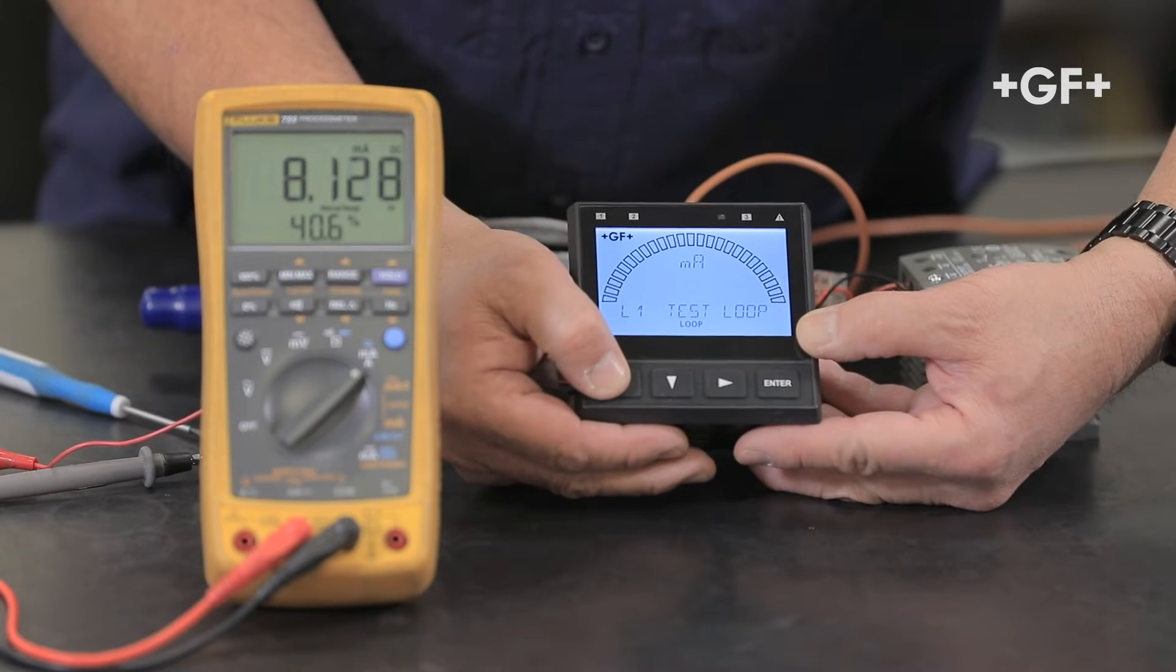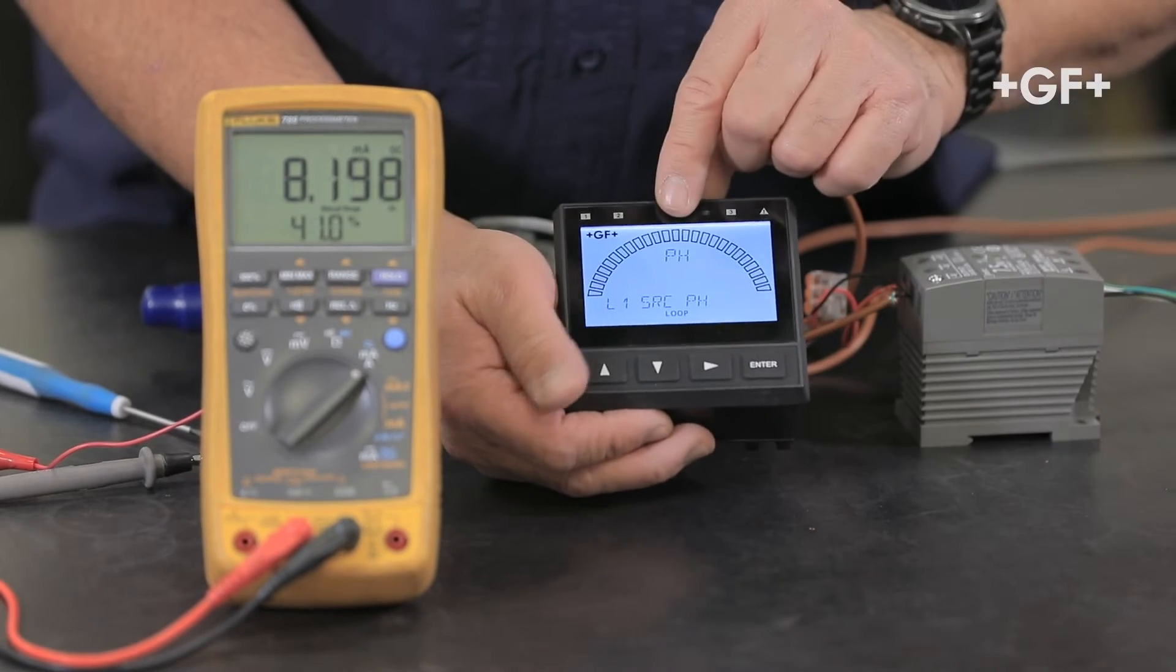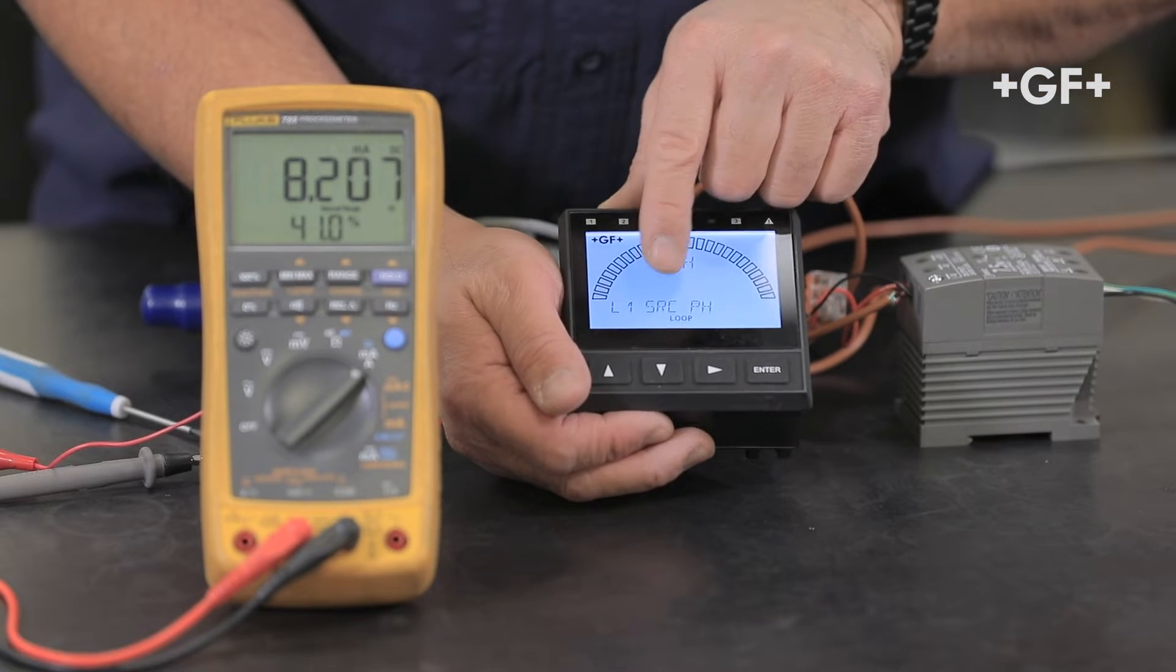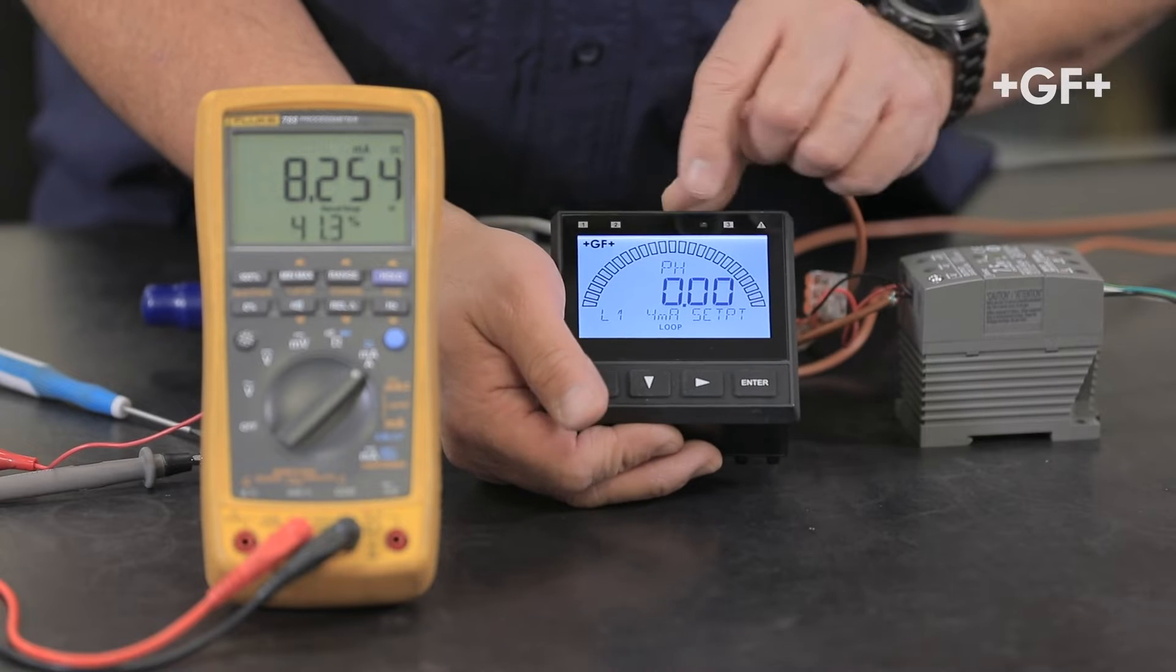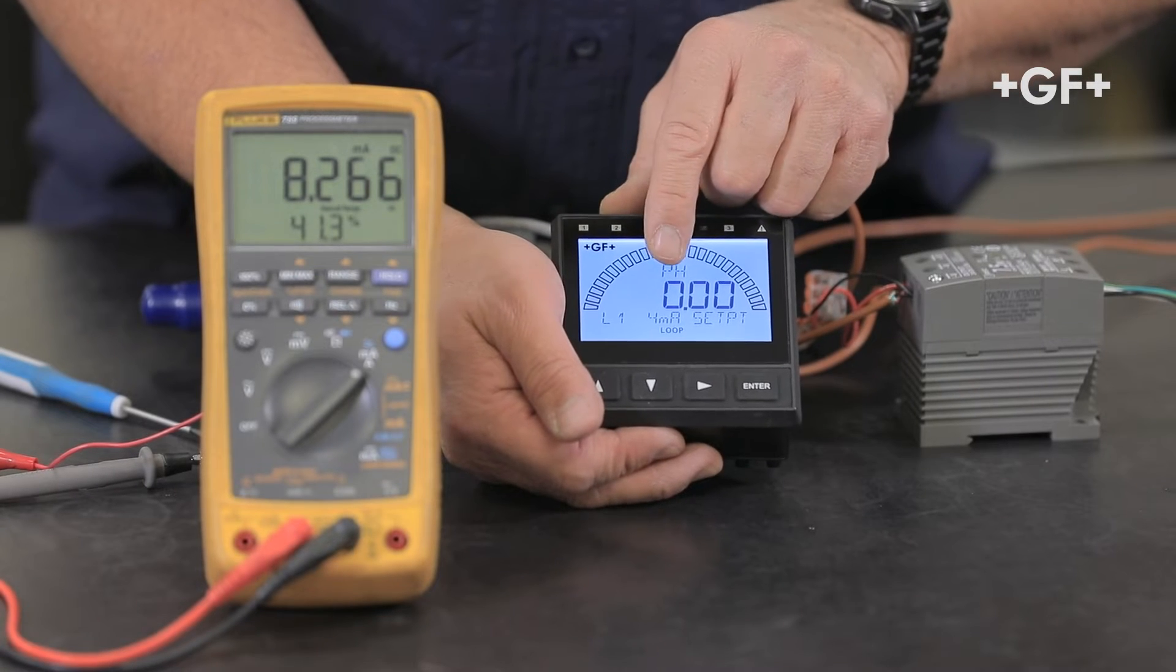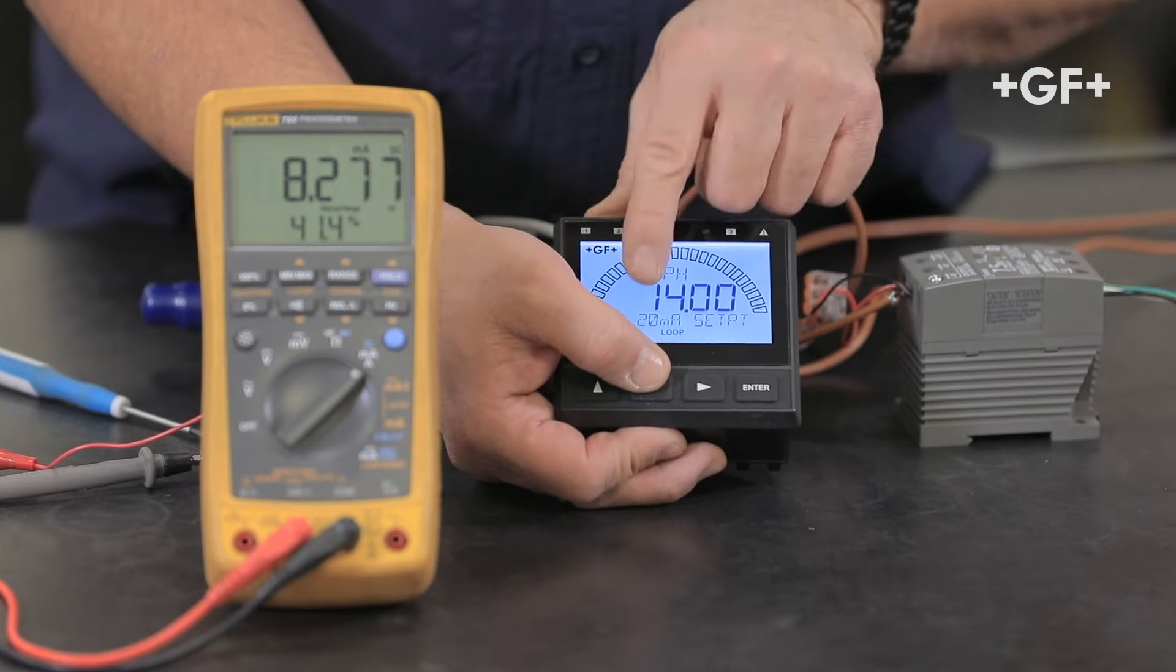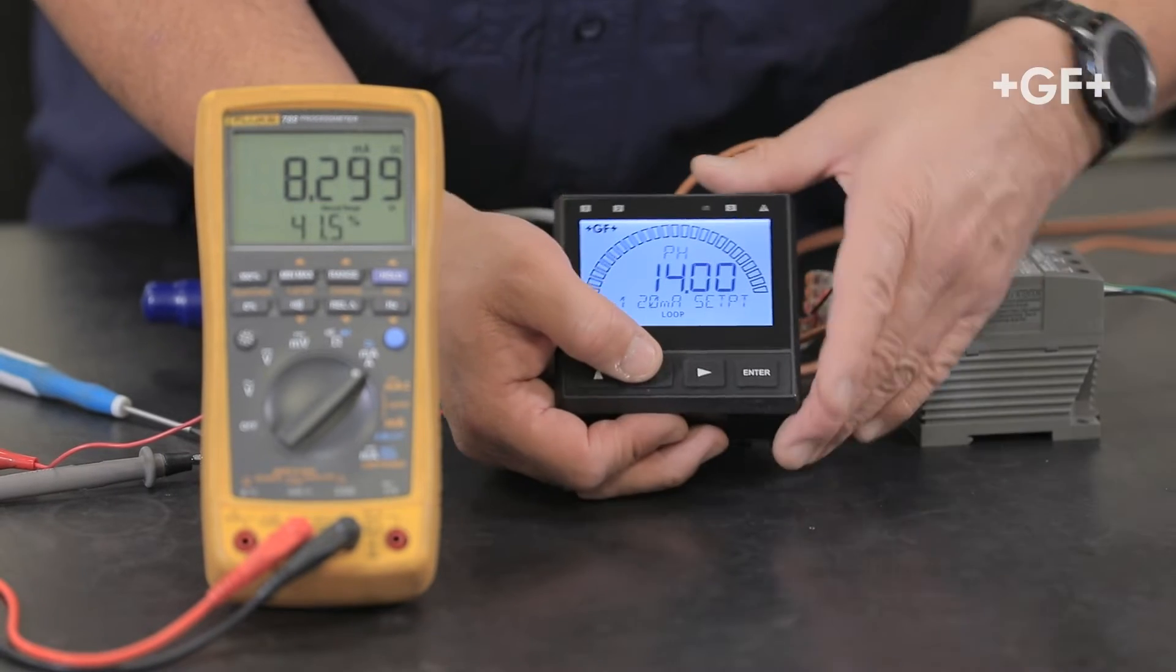I'm going to up arrow. This is the source. L1 source is for pH. Good. Down arrow. L1 4 milliamp set point is zero, 20 milliamp set point is 14. Perfect.